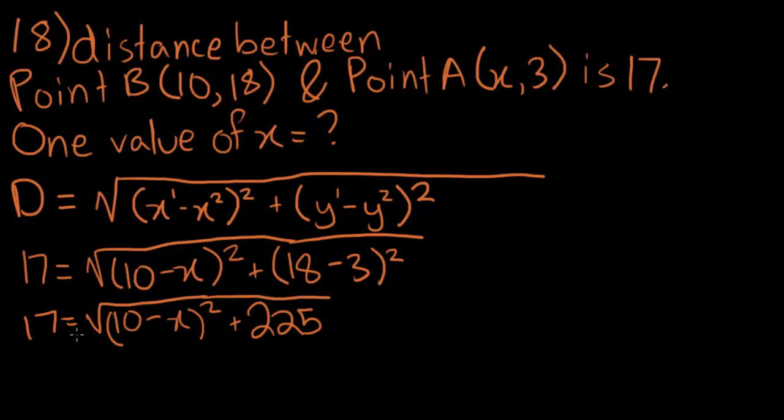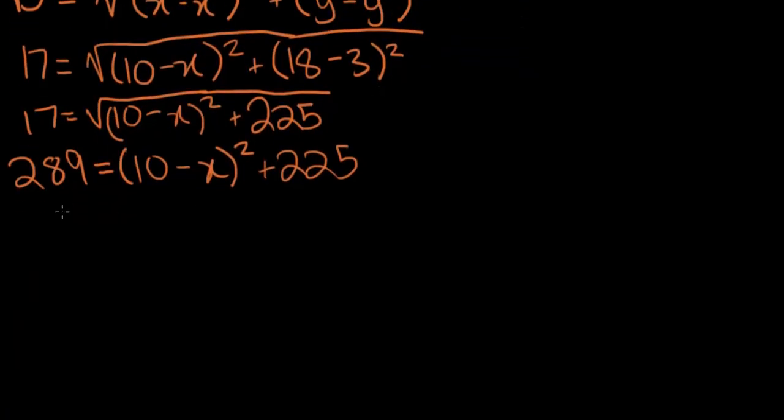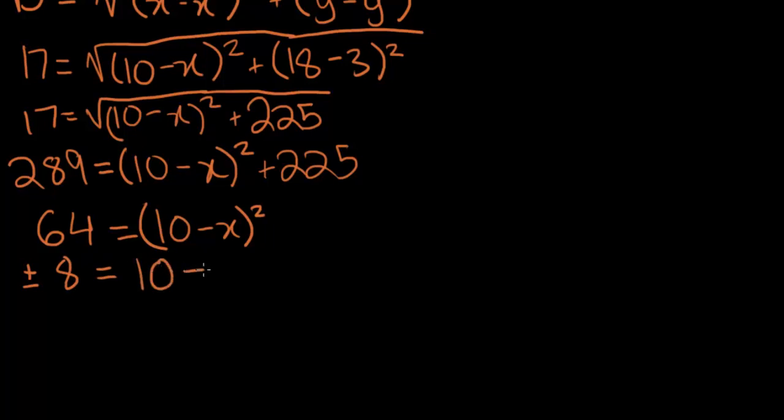So, if we square both sides right now, then we'll get rid of the square root. So, 17 squared is 289, which will be equal to 10 minus x squared plus 225. And now we're getting down to the wire. If we subtract 225 from both sides, we'll get 64 is equal to 10 minus x whole squared. And now, if we take the square root, that will be plus minus 8 is equal to 10 minus x.